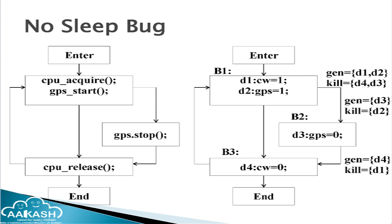Suppose we have code where we acquire a CPU wake lock, acquire a GPS wake lock, then release the GPS wake lock, and release the CPU wake lock. Each use of a wake lock is defined as a definition. We perform reaching definition data flow analysis. In block B1, acquiring the CPU wake lock is definition D1 (CW=1) and acquiring GPS is D2 (GPS=1). In block B2, releasing GPS is D3 (GPS=0), and in block B3, releasing CPU is D4 (CW=0). For each block we calculate gen and kill sets.